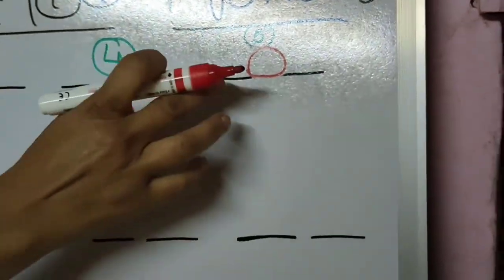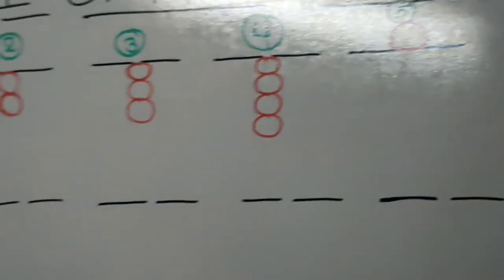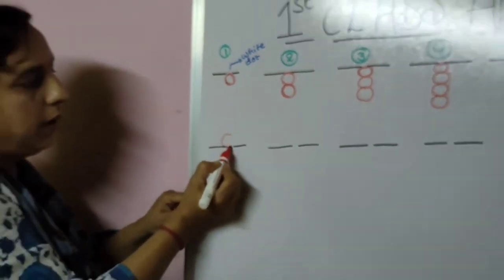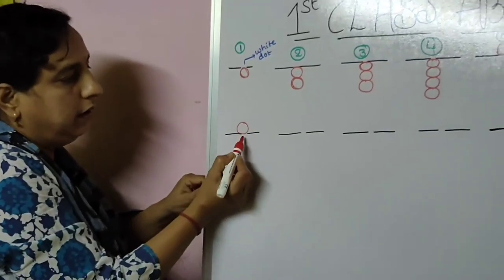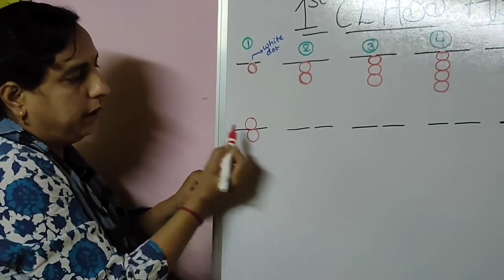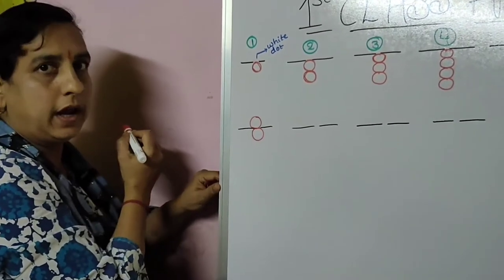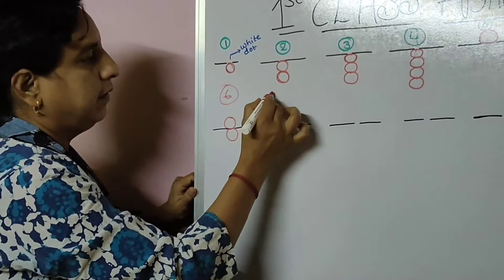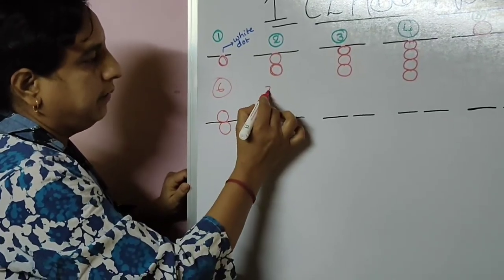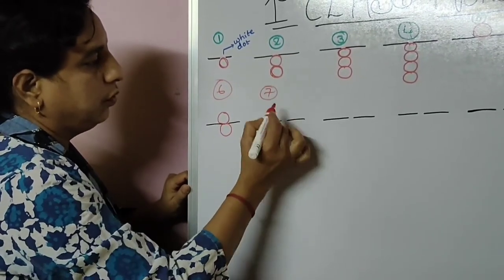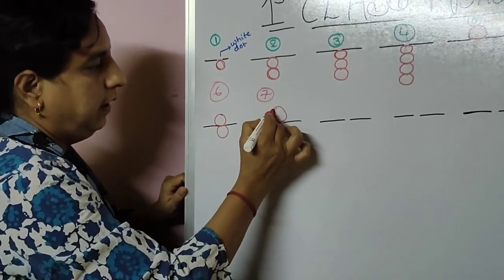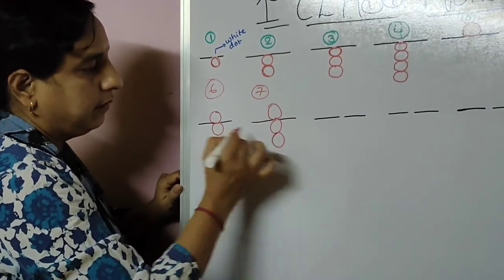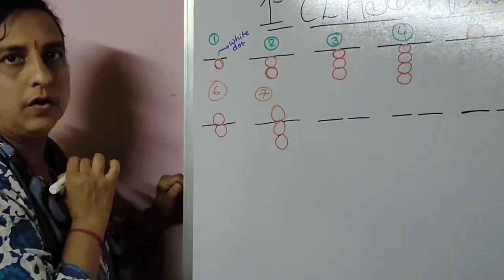Now 6 — after 5, which number will come? 6. How to draw? One upper bead, one lower bead. Now 7. This is 6, number 6. Now number 7 — I will show you. This is 5, 6, 7.